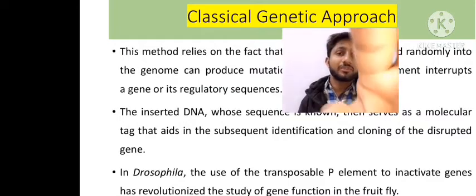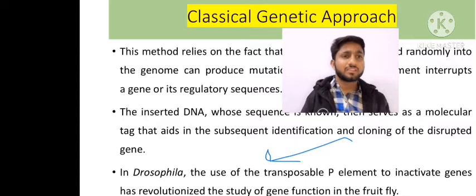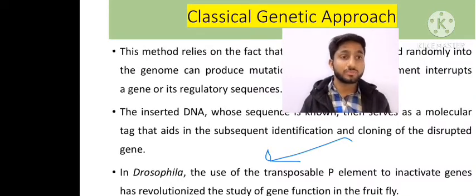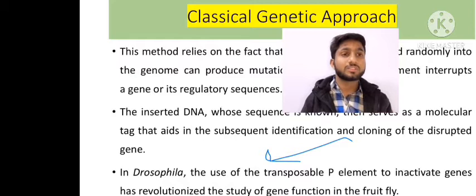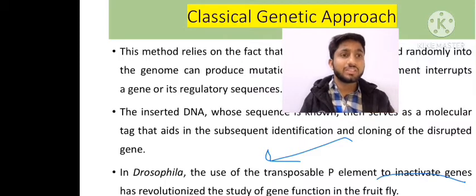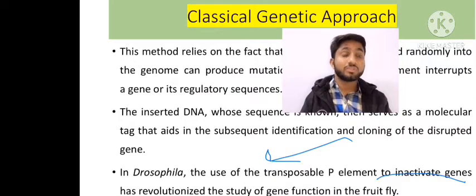Regarding loss of functional mutations: scientists used Drosophila, the common fruit fly, to inhibit certain characters. They used transposable P-elements, which were inserted into the genome to inactivate specific Drosophila genes. When a gene was inactivated, it would no longer produce the desired protein, thereby inhibiting specific characters in Drosophila.